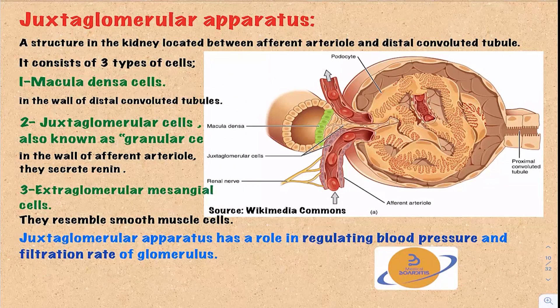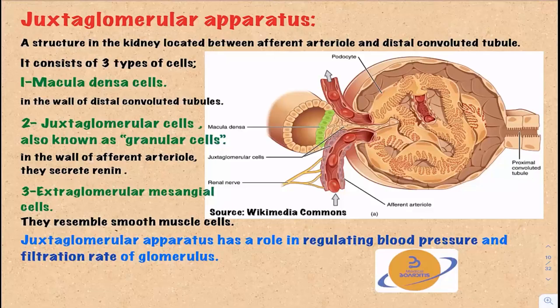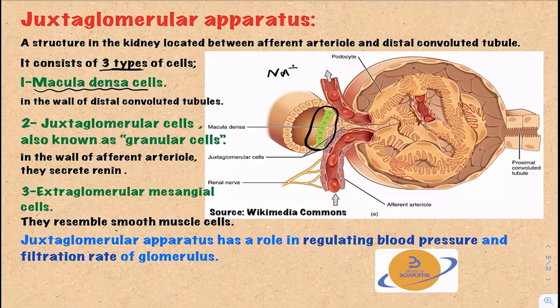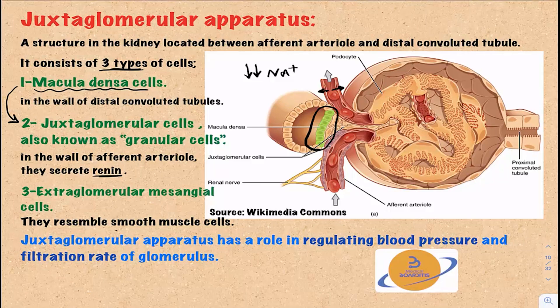Now let's talk about the juxtaglomerular apparatus — a structure in the kidney located between the afferent arteriole and the distal convoluted tubule. There are three types of cells. First, the macula densa cells, located in the wall of the distal convoluted tubule, are very sensitive to sodium levels in the renal filtrate. When sodium falls, they stimulate nearby juxtaglomerular cells to release renin, activating the renin-angiotensin-aldosterone system to increase sodium reabsorption. They also stimulate vasodilation of the afferent arterioles to increase blood delivery to the glomeruli.